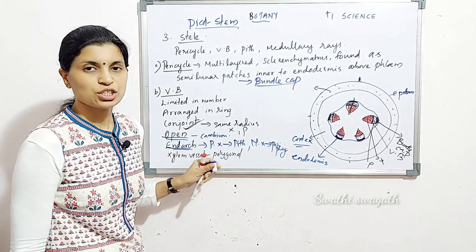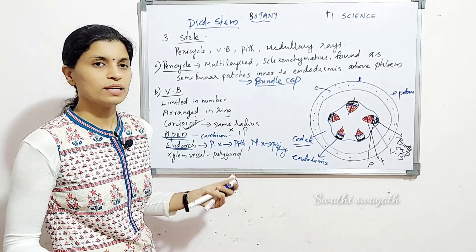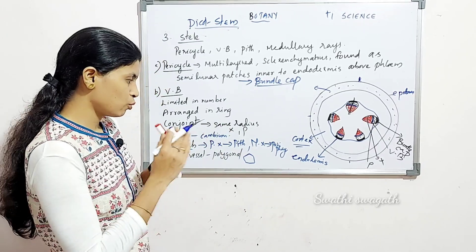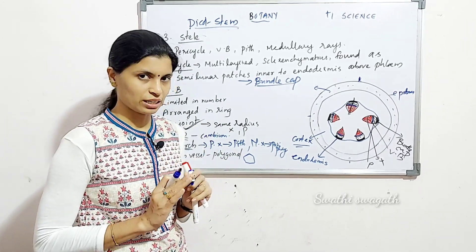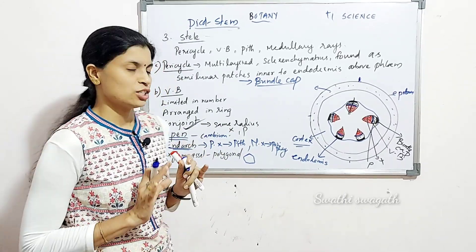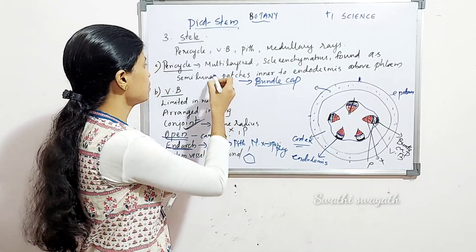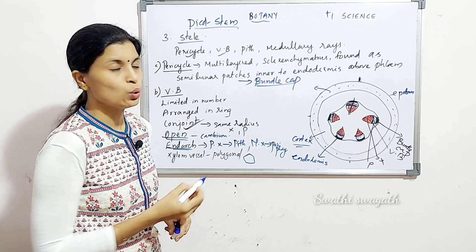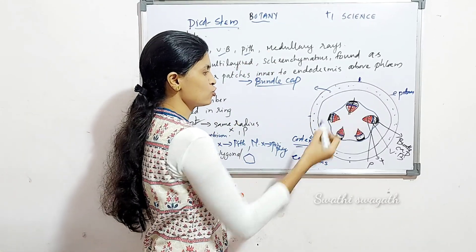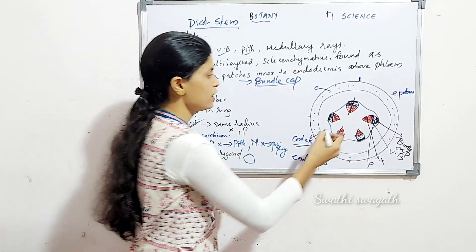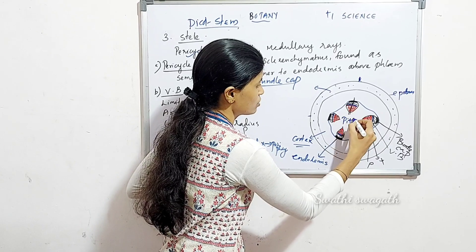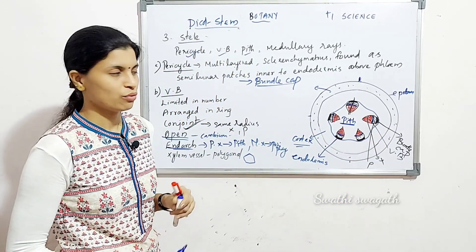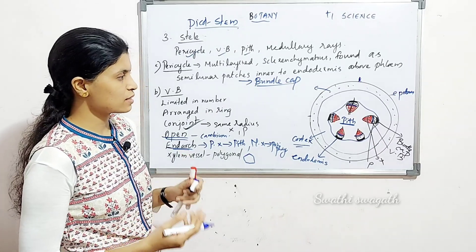Xylem vessels are polygonal in shape. Then the pith is the innermost region or central part. In the case of dicot stem, the pith is very large and it is parenchymatous with intercellular spaces.